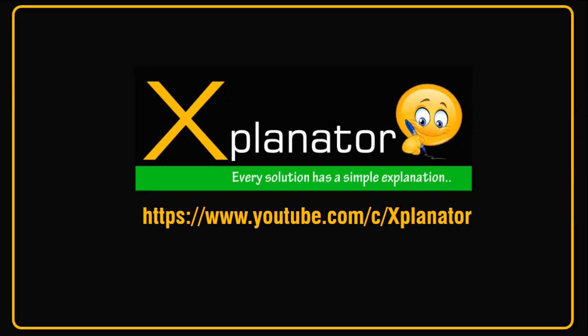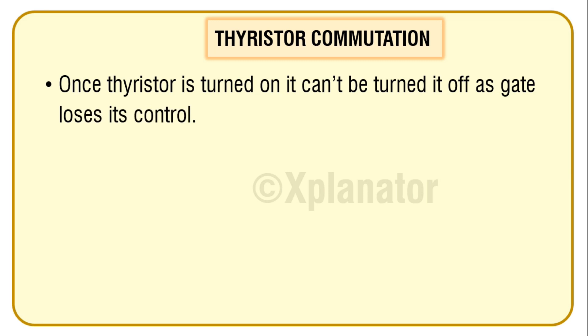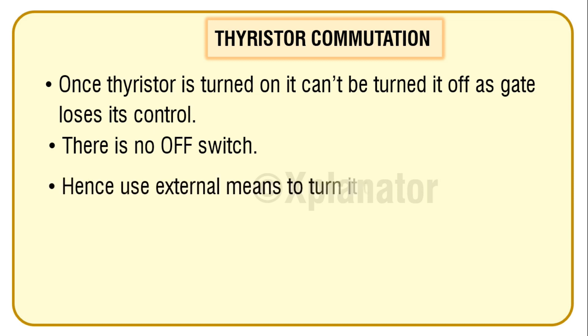Hi guys, greetings from Explanator. Today's video is on thyristor commutation, the different ways you can turn off a thyristor. Once you turn on a thyristor, you can't turn it off as the gate loses its control. There is no off switch, hence you have to use external means to turn it off.